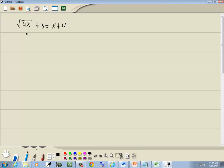Now, solving radical equations, our first step is to get a radical by itself. So I'm going to take the 3 and move it to the right side. So we get square root of 4x is equal to x plus 4 minus 3. Square root of 4x is equal to x plus 1.